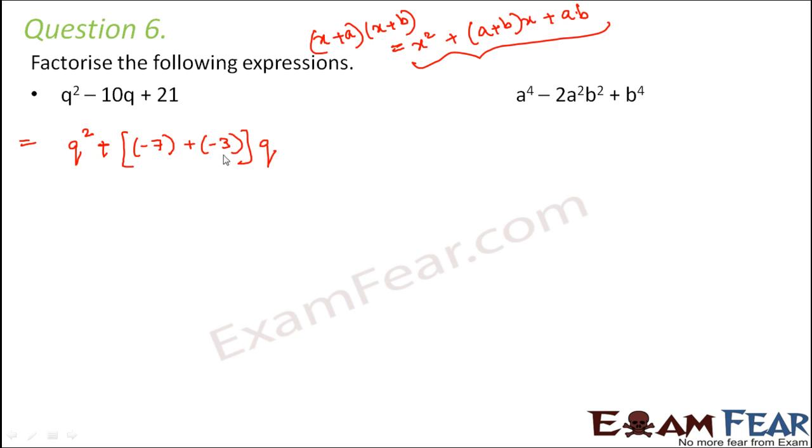So q square plus a plus b into q plus a into b that is minus 7 into minus 3. So you see we have very perfectly written it in this format. So therefore, this can be written as, how can we write it? This is equal to x plus a into x plus b.